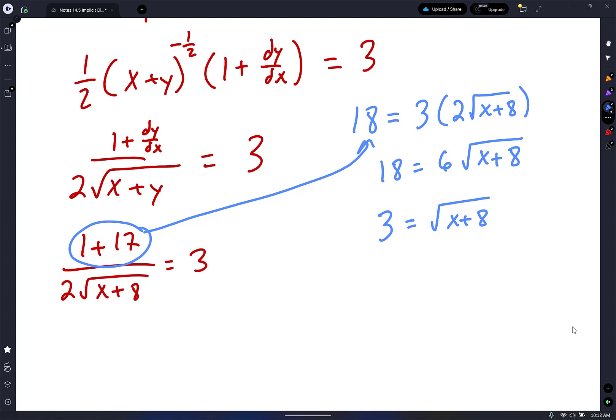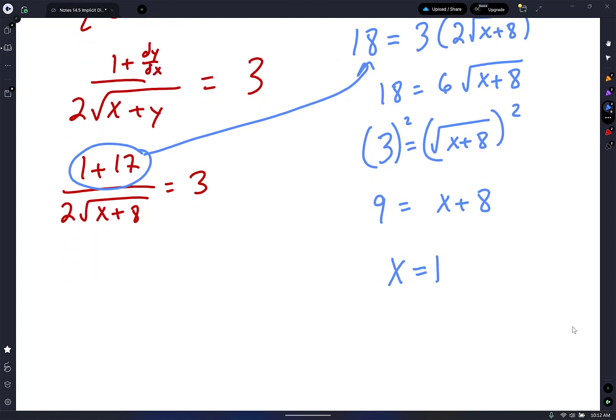Now I'm going to get rid of the square root by doing what? Square. Square both sides. And now you have 9 equals x plus 8. Now I subtract the 8. So what do I get? x equals 1. Applause.